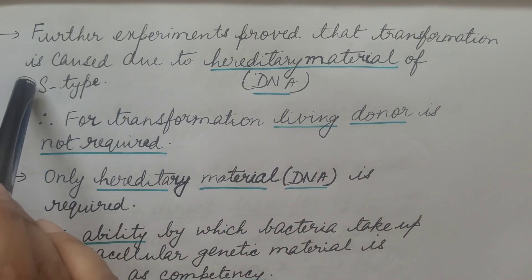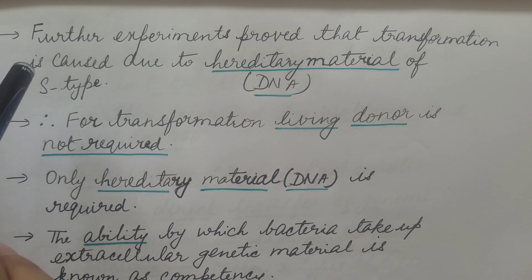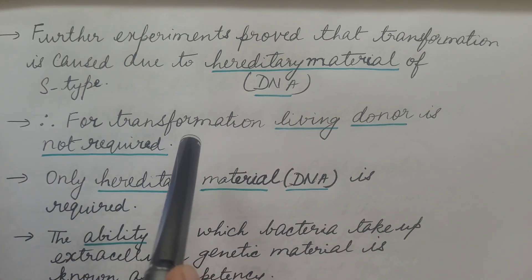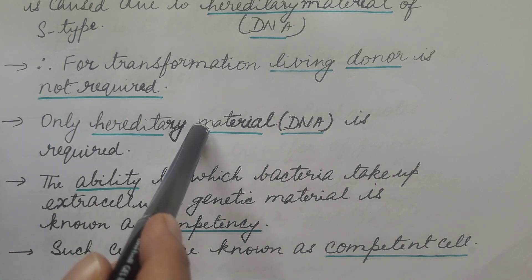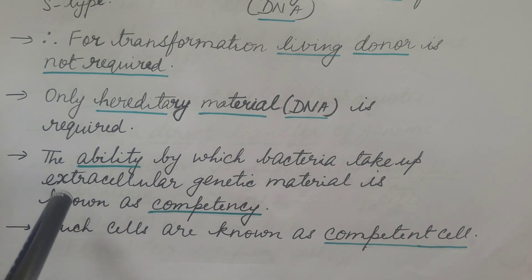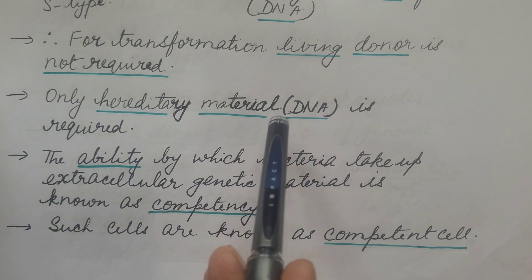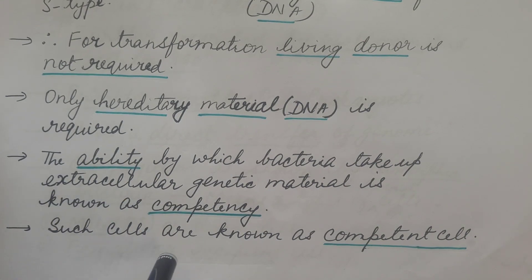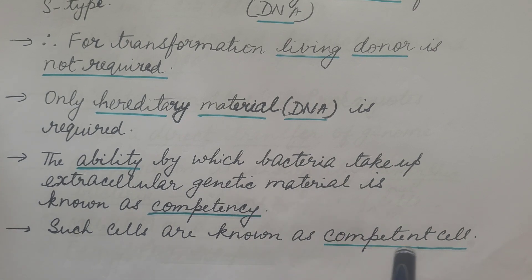That means avirulent bacteria was transformed into virulent bacteria, which caused the disease and resulted in the mouse's death. Further experiments proved that transformation is caused due to the hereditary material of S-type — in this case, DNA. So what was seen is that for transformation, a living donor is not required; only hereditary material is required. The R-type bacteria has the ability to take up this extracellular genetic material, and this capability of the bacteria is known as competency. Such cells which have the ability to take up extracellular genetic material are known as competent cells.